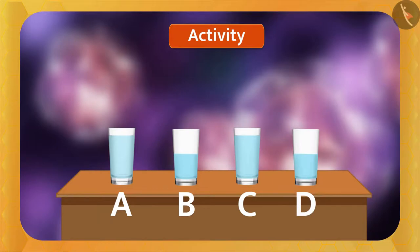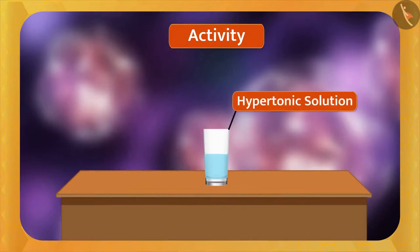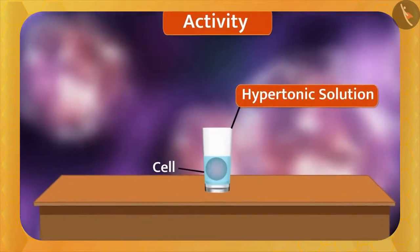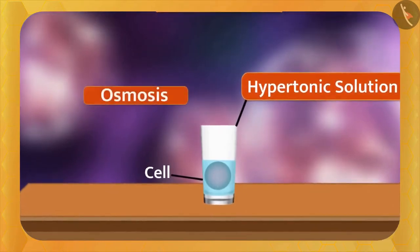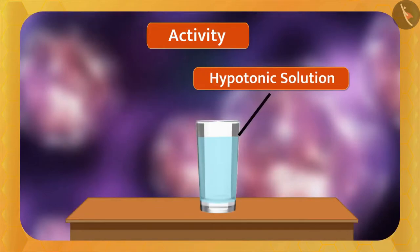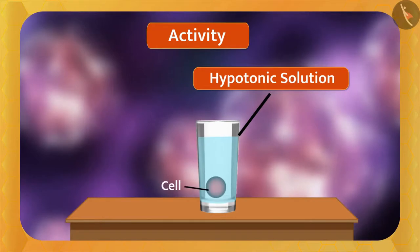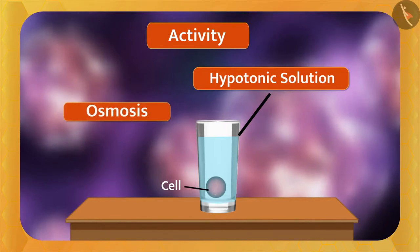Now friends, what will happen if you put a cell into these solutions? First of all, put the cell in the hypertonic solution. In this solution, the concentration of water is less than that of the cell. So osmosis occurs — the water of the cell will come out of the plasma membrane and gradually the size of the cell will decrease. Now, put the cell in the hypotonic solution. Here, the concentration of water in the solution is higher than that of the cell. So osmosis again — the water of the solution will enter the cell through the plasma membrane and the size of the cell increases.